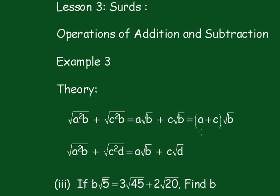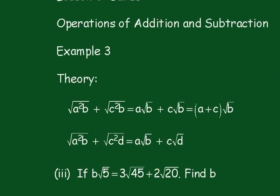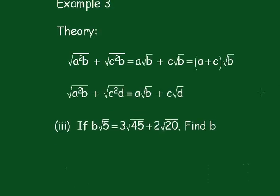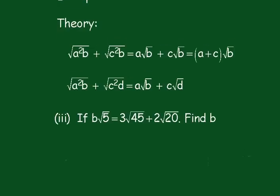This one's a little bit more involved, more of an examination style question. Now if b root 5 equals 3 root 45 plus 2 root 20, find b. So a lot of concepts tested in this little one.